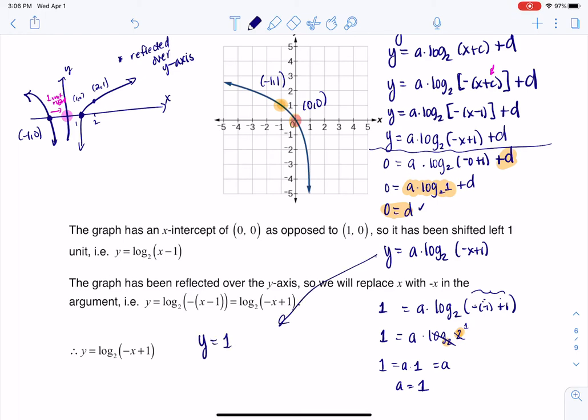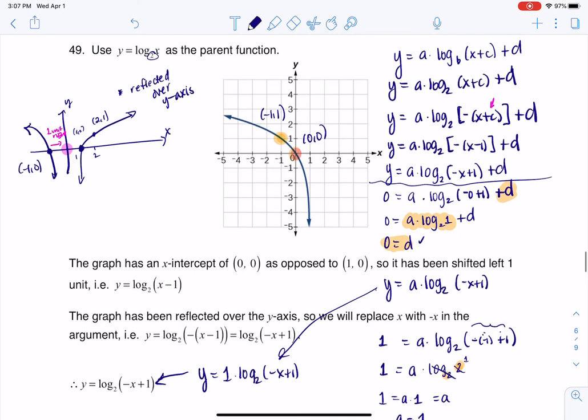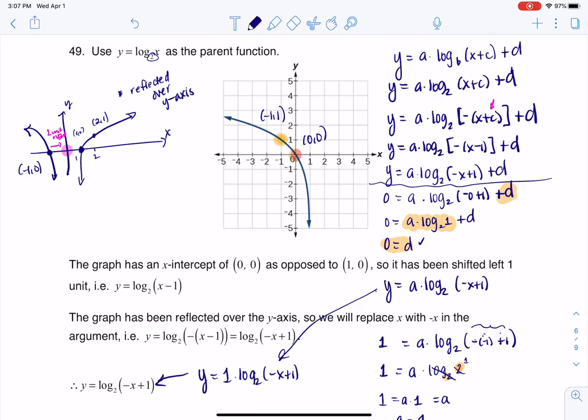So that all means that if I simplify this, I have y would be equal to 1 times log base 2 of negative x plus 1. And that's why you see me writing that answer there. All right. So there were a lot of transformations. So just to be clear, we had to first think about how we reflected over the y-axis. And when we reflected over the y-axis, that put that negative symbol there.